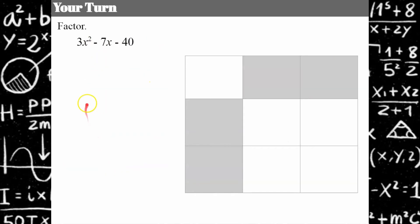Here's another one. Now be careful. This is 3x² - 7x - 40, so keep track of those negative signs. Go ahead and pause and come back and hit play when you're ready.